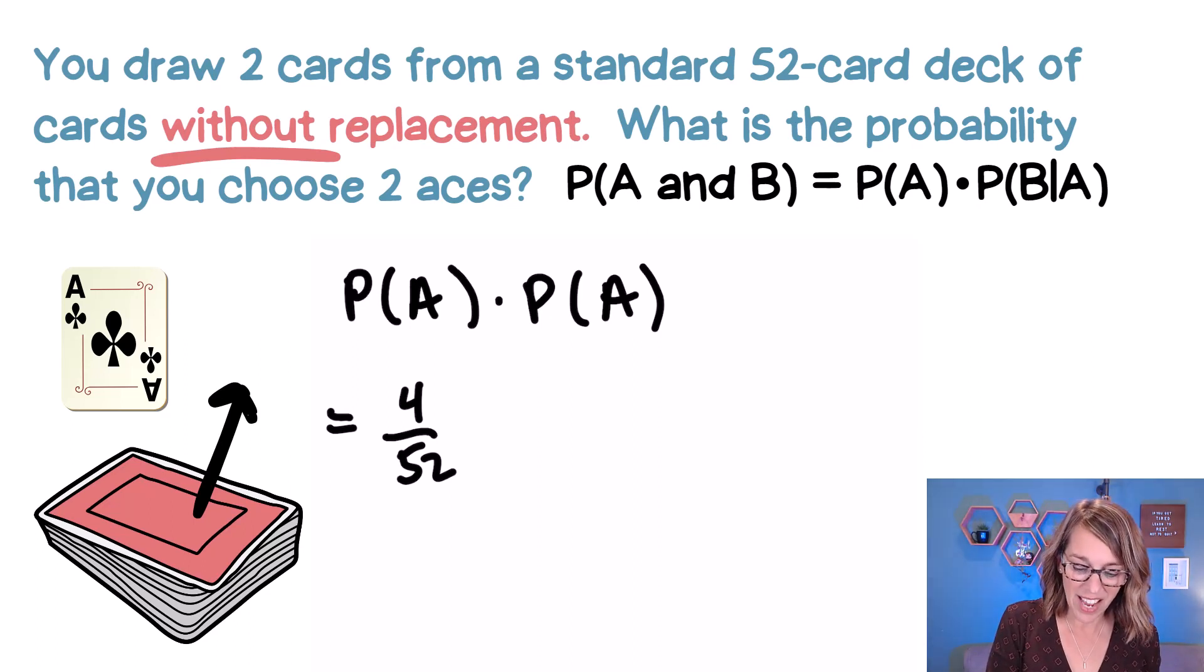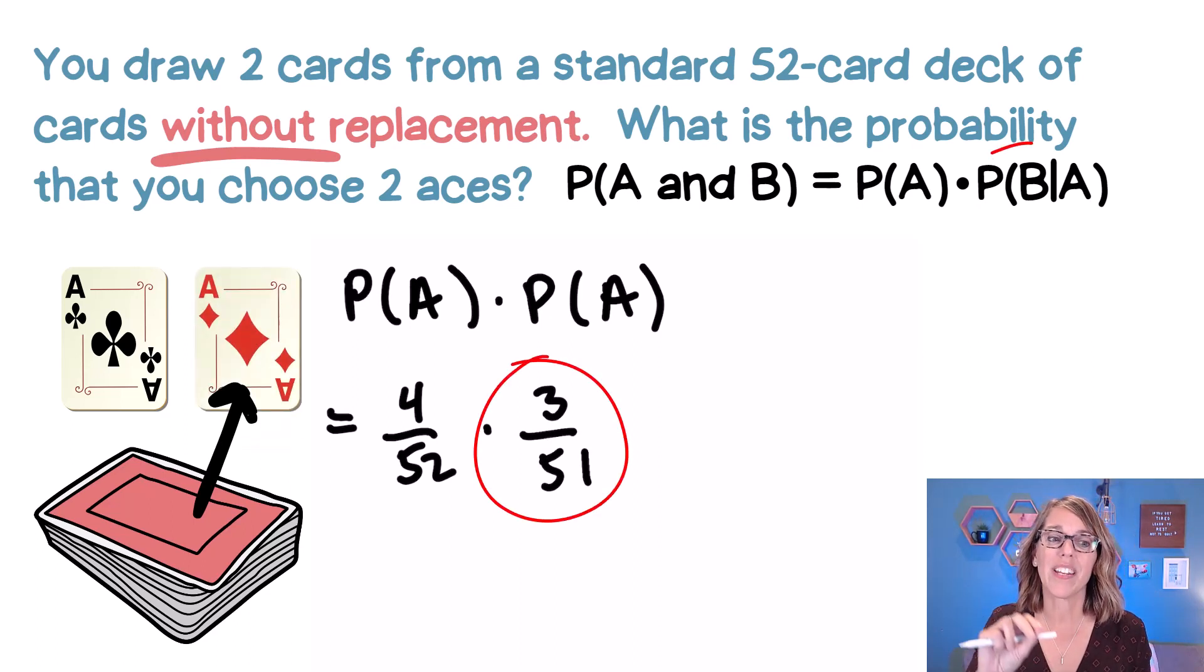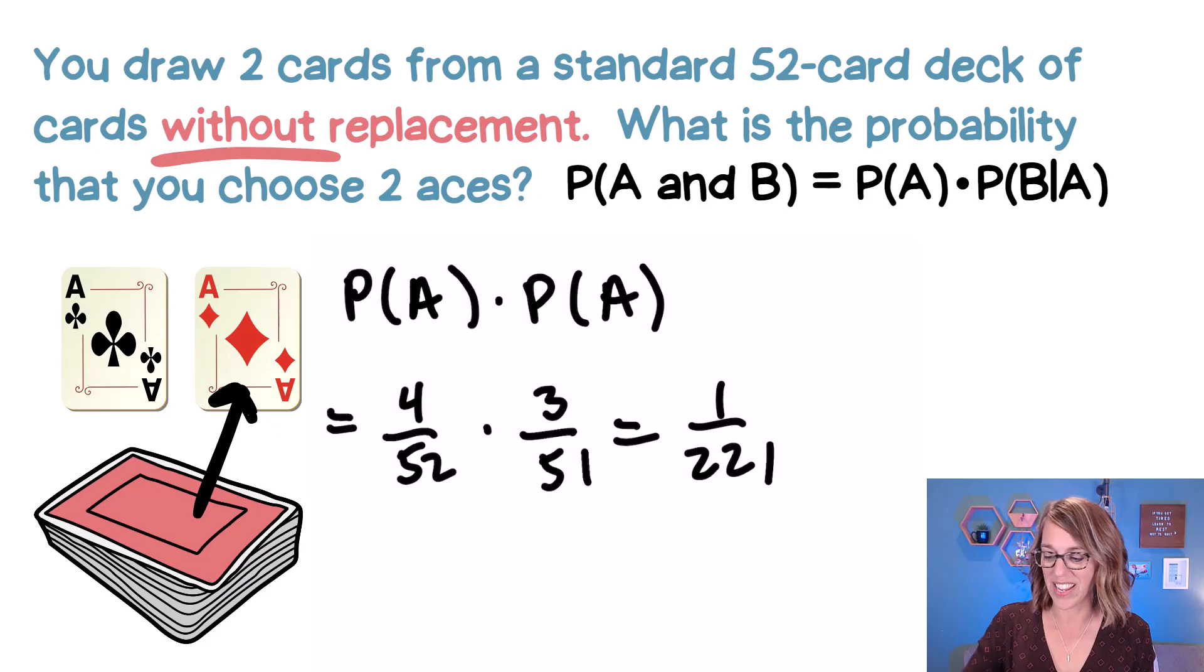So in my second probability, this probability of drawing that second ace, I end up with three left out of the 51. So that three out of 51 is the probability of getting that second ace, given that the first one was an ace. If I do that computation, it's an even smaller probability, about 0.0045. Let's convert that one to a fraction. As a fraction, we end up with one over 221.